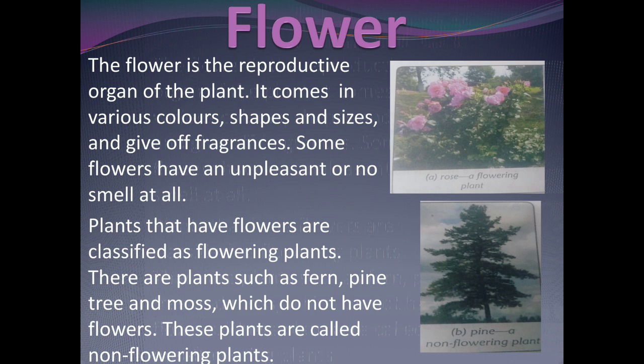Plants that have flowers are classified as flowering plants. There are also non-flowering plants. There are plants such as fern, pine, tree, and moss which do not have flowers. These plants are called non-flowering plants.